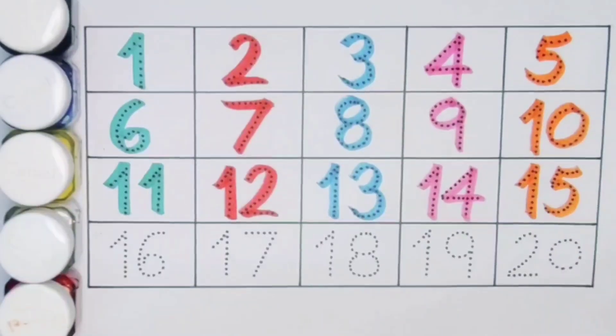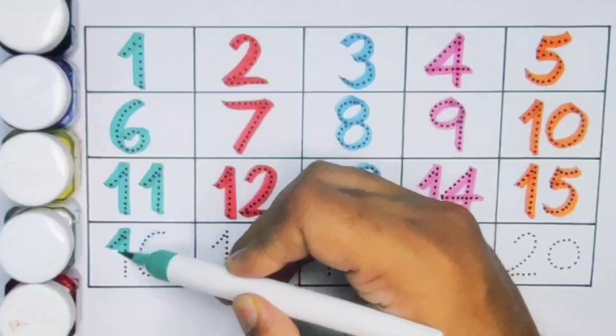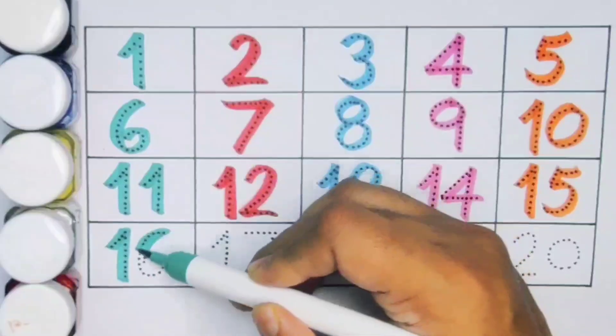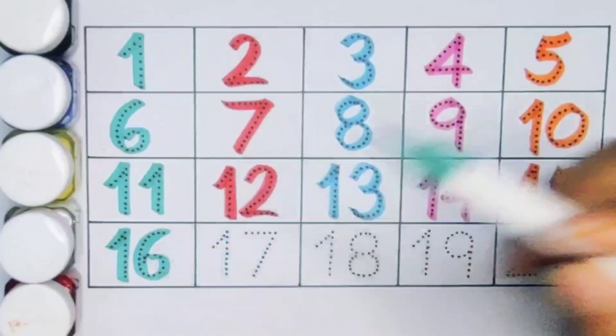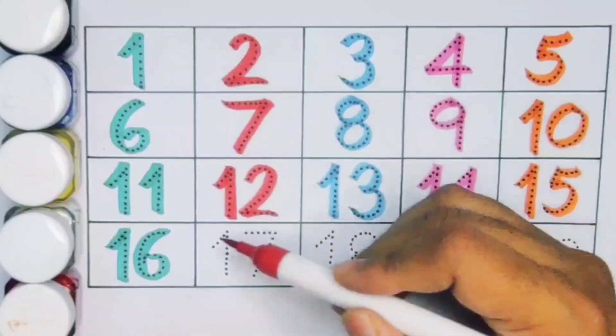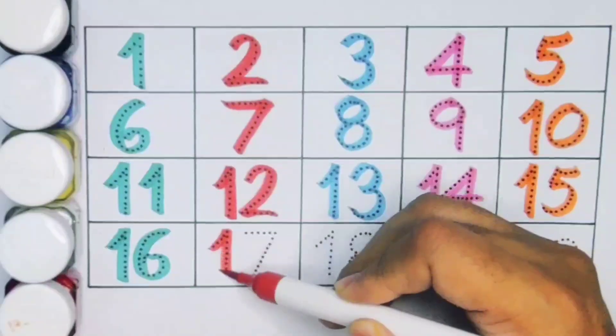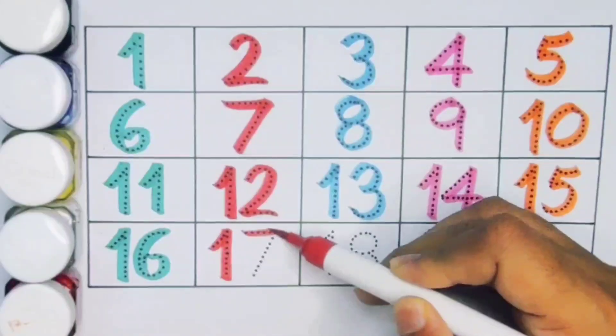Next kids 16, 1, 6, 16. Number 16. Next kids 17, 1, 7, 17.